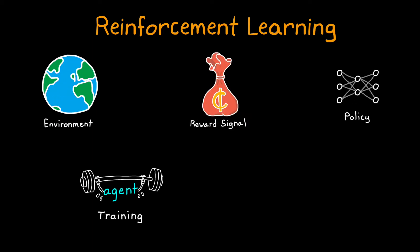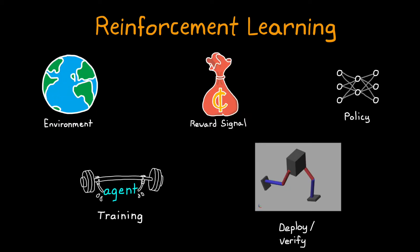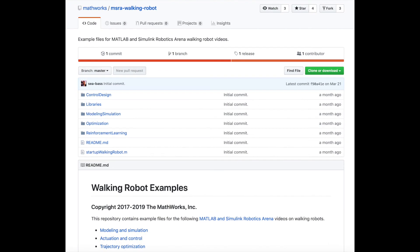Now that we have an understanding of the reinforcement learning workflow, in this video I want to show how that workflow is put to use in getting a bipedal robot to walk using an RL equipped agent. We're going to use the walking robot example from the MATLAB and Simulink Robotics arena that you can find on GitHub. I've left a link to it in the description.